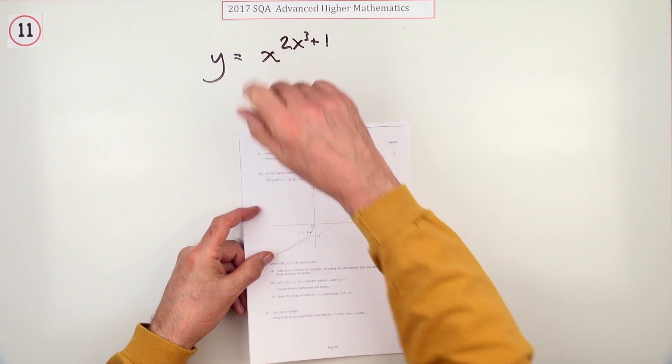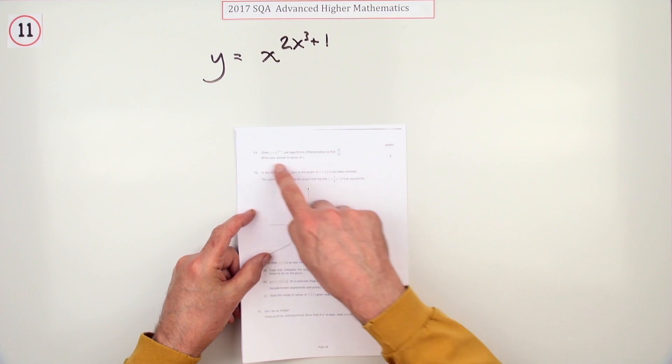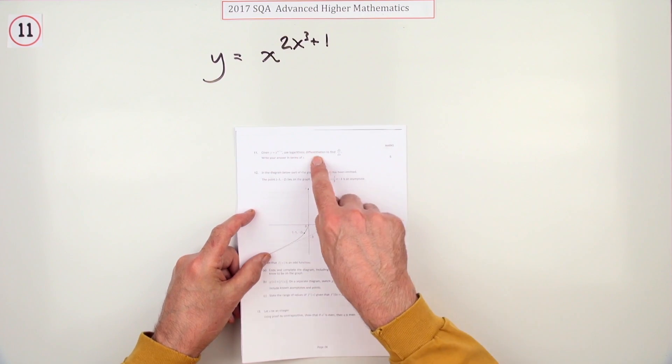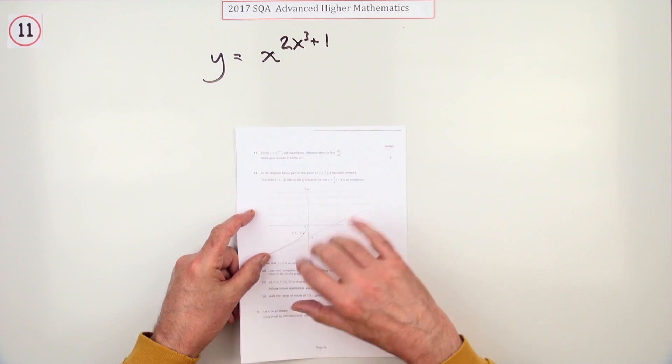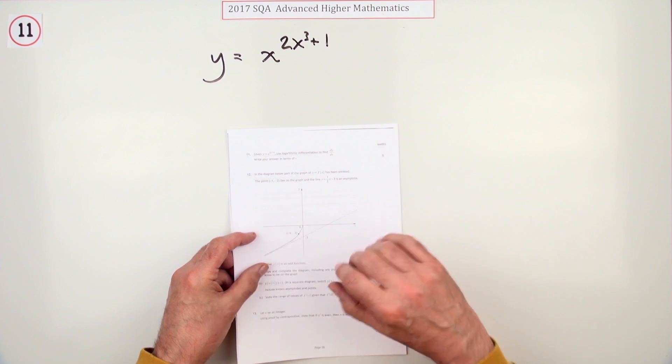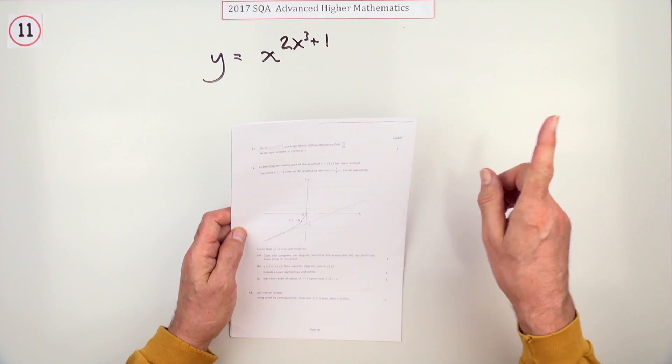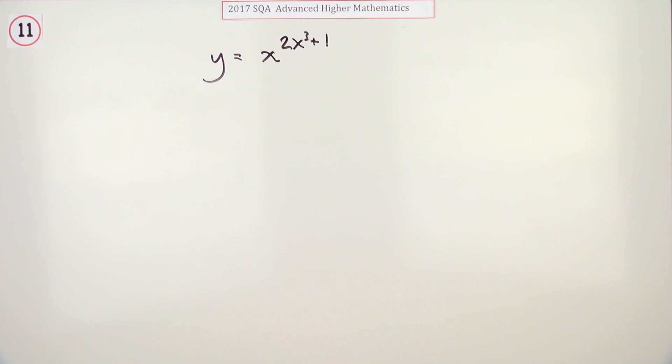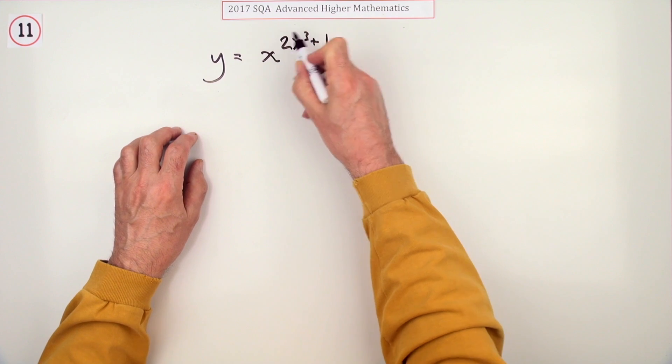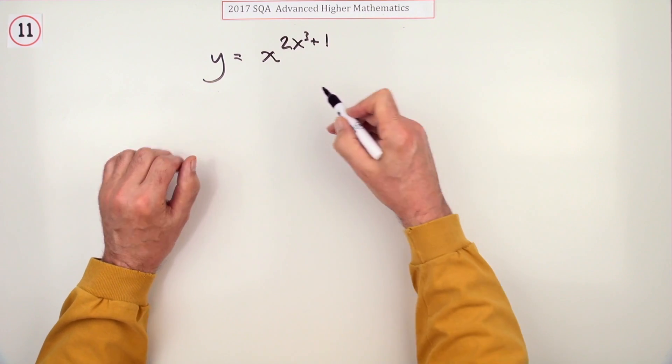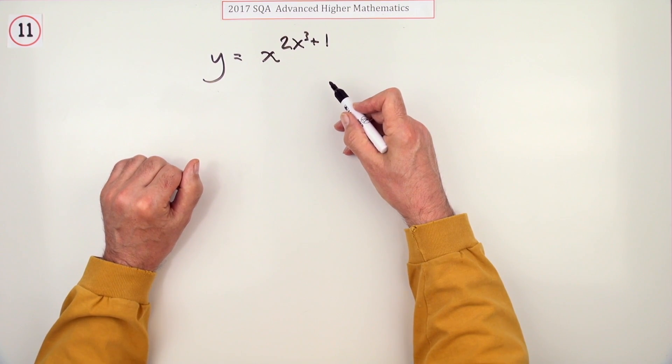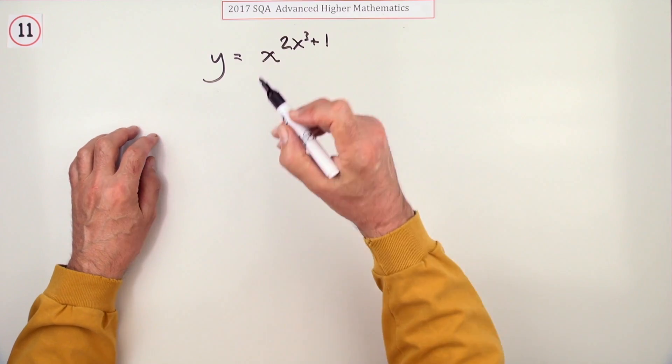Number 11 from the 2017 Advanced Higher paper. Here we go. Use logarithmic differentiation, five marks here. This takes you beyond the halfway mark. There's a plus one in an index which means you could split it into something times just an x, but I don't see any benefit in that just now.